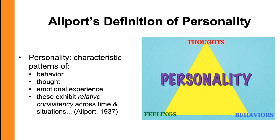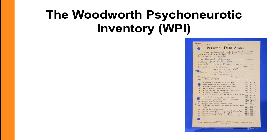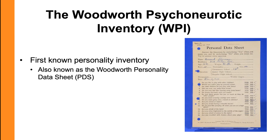One of the first, if not the first, formal personality assessments was something called the Woodworth Psychoneurotic Inventory or the Woodworth Personality Data Sheet. This is the first known personality inventory, and it was created by the military. They realized that not every soldier was cut out for being on the battlefield, and many soldiers, although they seemed to be in relatively good mental health, when put into battlefield situations did not handle it well. Many developed shell shock, or what we now know to be PTSD, after their experiences on the front lines.